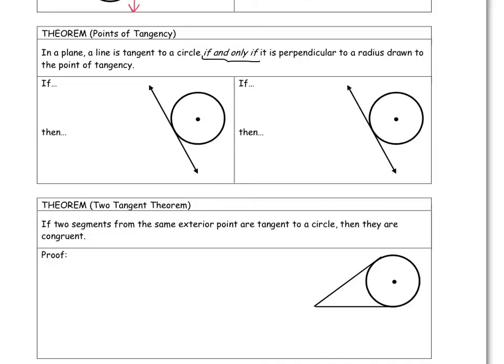If you remember back from the beginning of the year, the converse of a theorem wasn't always true. Only special theorems had a converse that was true. So if we're using the phrase if and only if, that's what we're implying, that the converse is also true. So I'm going to show this theorem and write this theorem down two different ways.